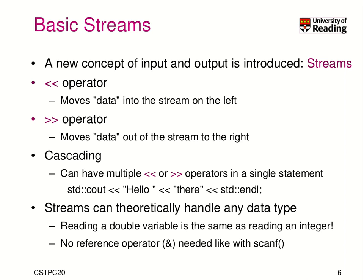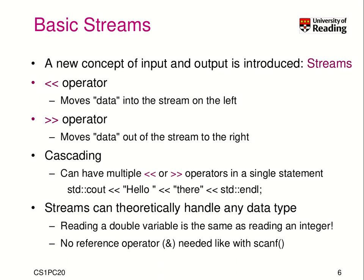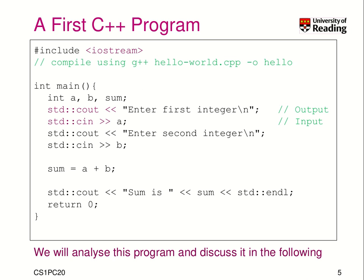That means reading a double variable is syntactically the same as reading an integer. You don't have to use any kind of format specifier like printf's percent-d, percent-s, and so on — that's all not needed. The type is detected when we do such an operation. Here we figure out it's an integer and call the right function. Also, we don't need the reference operator when reading data as we needed for scanf — we really read data from standard input into the variable a, and it's not necessary to provide the memory address.